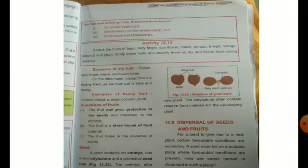Next, you are asked to collect fruits of bean, lady finger, sunflower, maize, tomato, brinjal, and others and classify them. Dry fruit examples include: cotton — the fruit from which cotton comes is also a dry fruit — lady finger, maize, sunflower, and bean are examples of dry fruits.